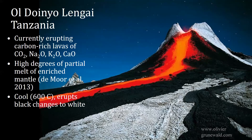Let's turn to this volcano in Tanzania called Oldoinyo Lengai. Has anybody been there before? I haven't either. This is what we're planning to do at Oldoinyo Lengai, and I'll tell you why we think it's such a great location to visit. What's happening here is that it is erupting right now carbon-rich lavas called carbonatites or natrocarbonatite lavas. They're made dominantly of CO2, Na2O, K2O, and CaO — you don't see silicon in there.